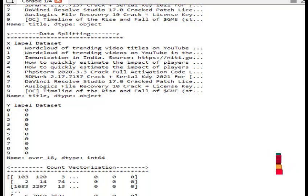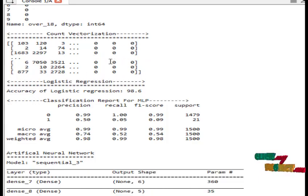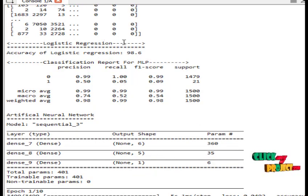Data splitting: our data is split into training and testing data. Count vectorization: count vectorization is the text is converted into numerical values.